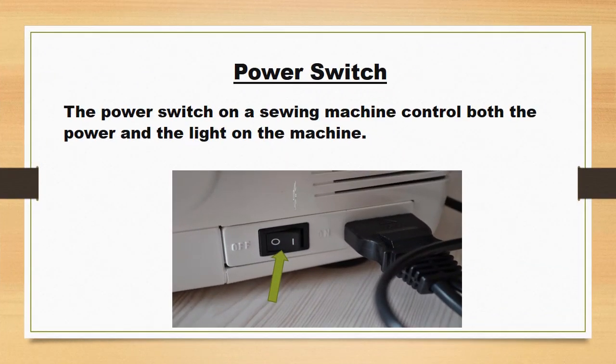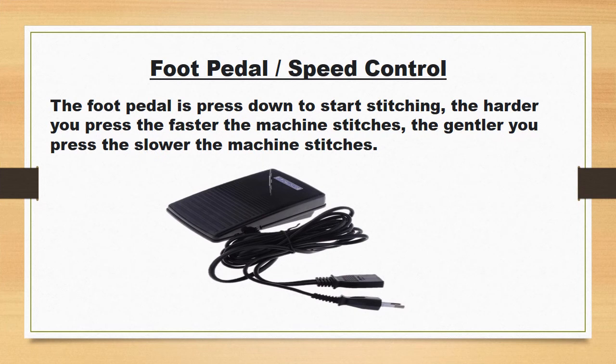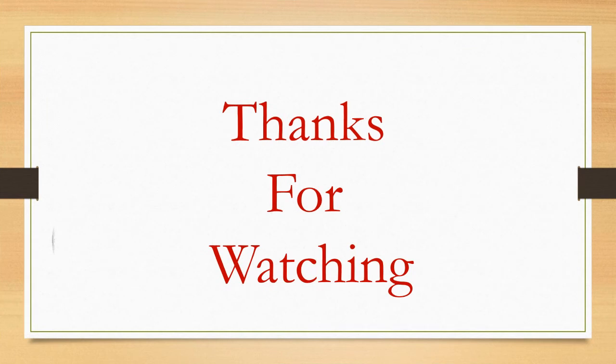Power Switch. The power switch on a sewing machine controls both the power and the light on the machine. Foot Pedal. The foot pedal is pressed down to start stitching. The harder you press, the faster the machine stitches; the gentler you press, the slower the machine stitches.